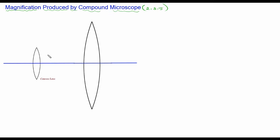The compound microscope is a combination of two convex lenses. This convex lens nearer to the object is called the objective lens, represented by O. The lens nearer to the observer's eye is called the eyepiece, represented by E. O is the optical center of the objective lens and E is the optical center of the eyepiece.